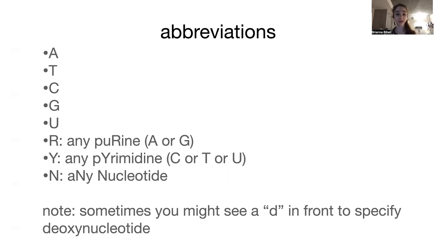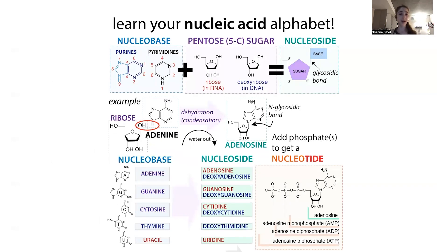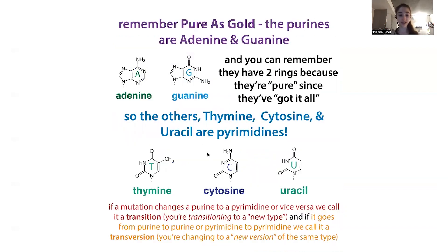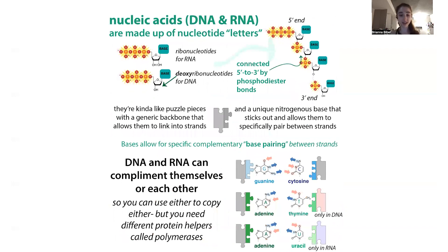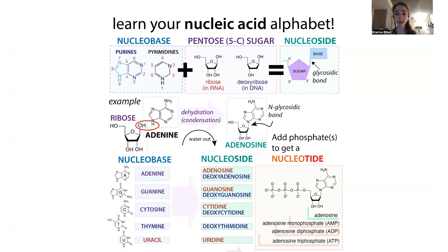You might also see a 'd' in front to specify the deoxynucleotide. I was talking in terms of nucleotides, but we can also talk in terms of nucleosides and nucleobases. The nucleobase is just the ringy part — it's the part that allows specific base pairing, letting strands of DNA stick together and act as templates. But the nucleobase alone isn't enough; you need the other parts to link it together, which is a sugar. When you have just the sugar and the nucleobase, you have a nucleoside — 'side' think 'sugar.'